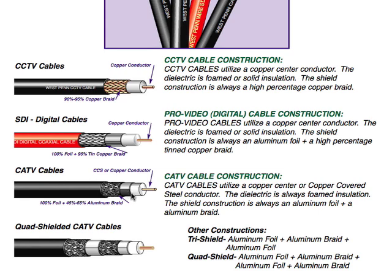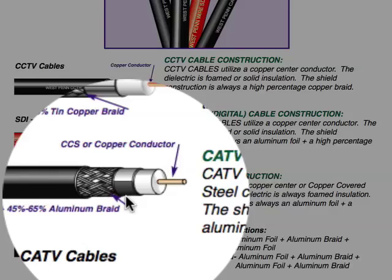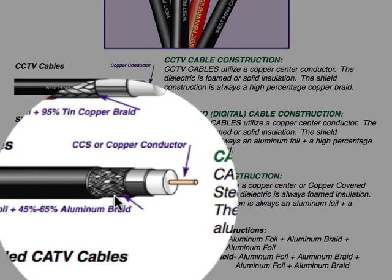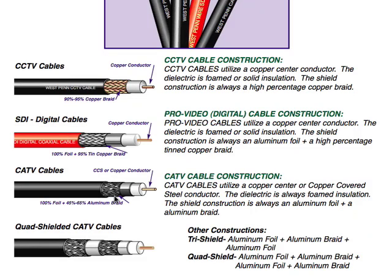We do also utilize bare copper for many CATV designs — for satellite dishes and other applications where the whole center conductor is needed to carry the electrons. The dielectric is a foamed insulation. The shield is where the differences come in: we use a 100% aluminum foil, which is the best protector against any RFI or high-frequency noise penetrating into the cable. Then we use a low-percentage aluminum braid — aluminum because CATV cables need to be inexpensive due to the volume used. Coverage is only 45% to 65%, because we're not really worried about EMI or low-frequency noise disrupting our video.